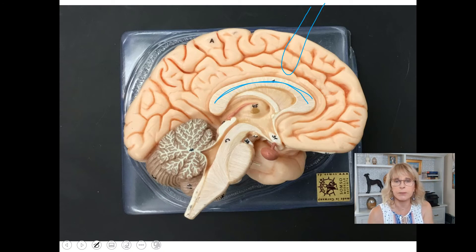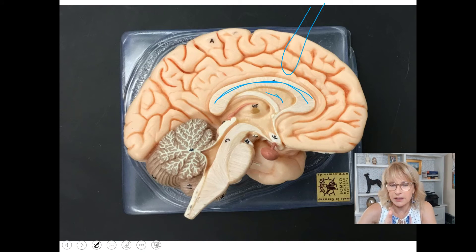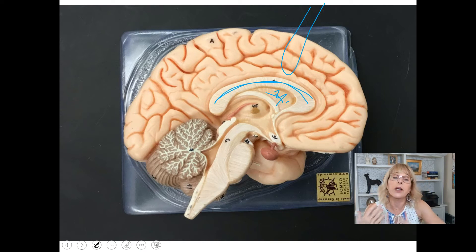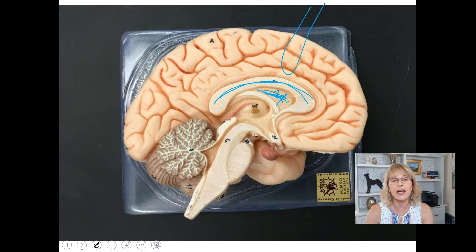The septum pellucidum — it's really conceptual. Follow me on this. This right here is kind of like a little window, like a thick piece of saran wrap. If you pop through it, on the other side there is a space that holds fluid. Knowing about that space is something you'll encounter if you take 150 or 200. But this saran wrap that keeps the fluid in that side is called the septum pellucidum.